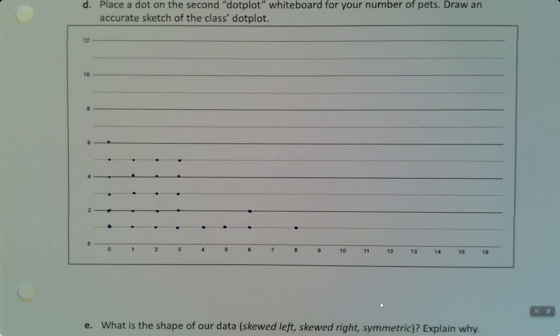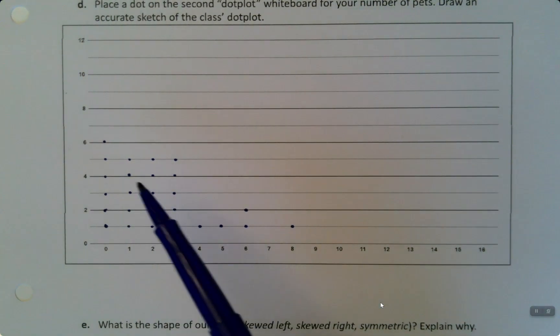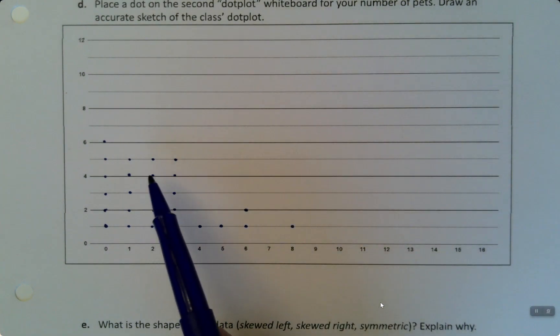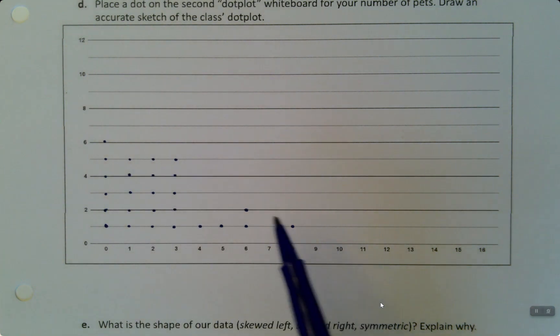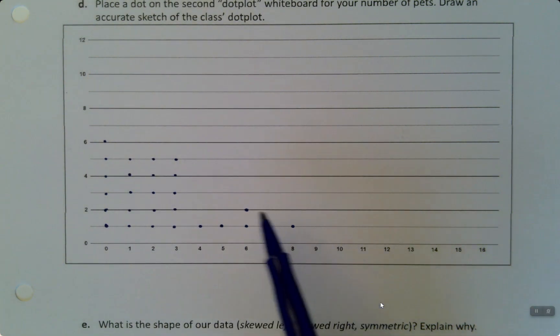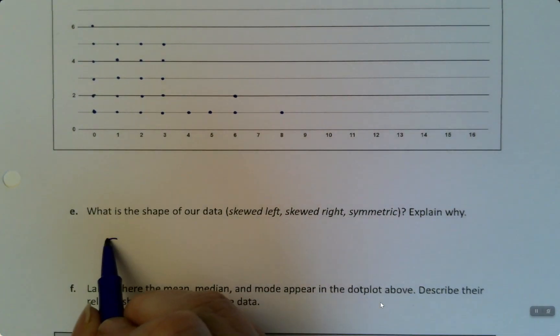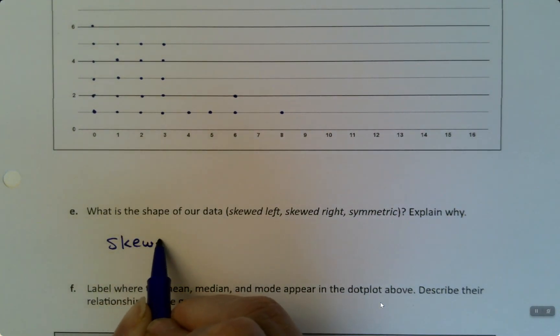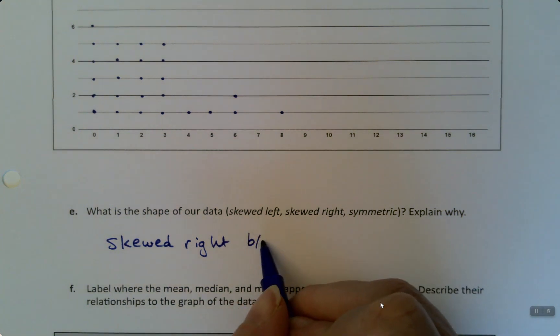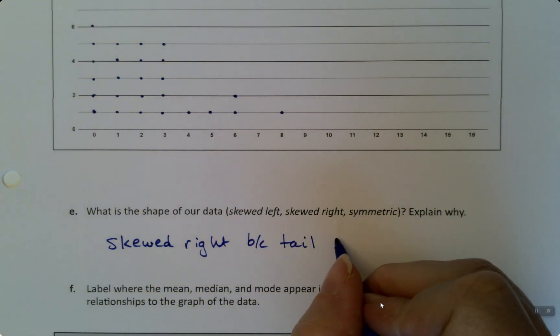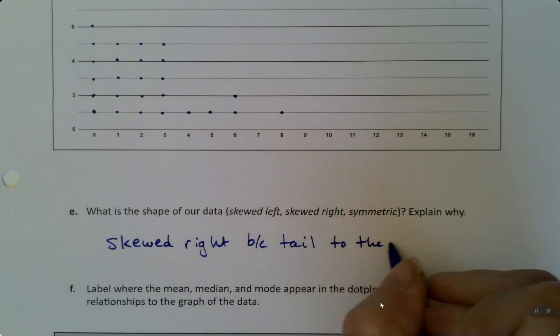And then how many fours? There was just one four, one five, two sixes, and an eight. There we go. That's the dot plot. So part D is done. We sketched the dot plot. Now what is the shape of our data? The shape is going to be referring to where the tail goes. We can see that the bulk of the data are over here, and there's a tail tapering off this way. So since we have that tail to the right, this is skewed right because it has a tail to the right.